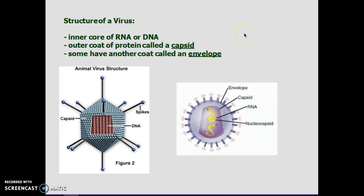Here's the basic structure of a virus. There are basically two things you need to remember. They do have DNA as their genetic material, or RNA. Some of the more deadly retroviruses have RNA on the inside. And then they have an outer coat of protein, which is called a capsid. And then there are some viruses that have a third layer around them called an envelope, and they're even harder to destroy.